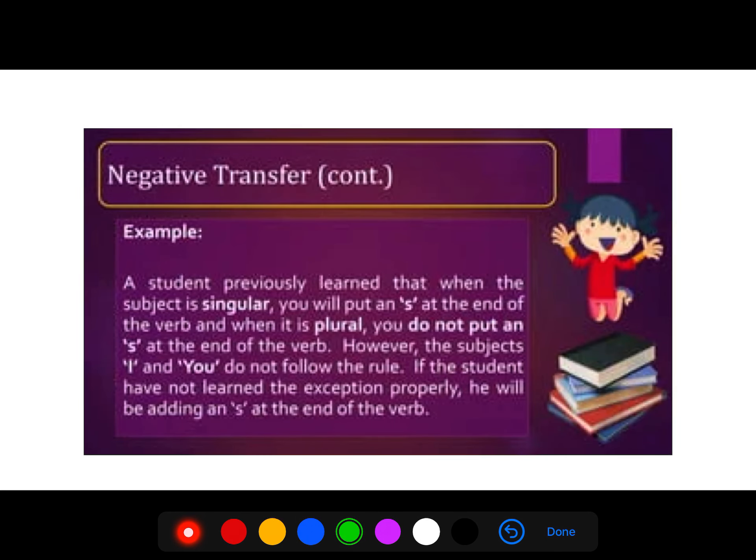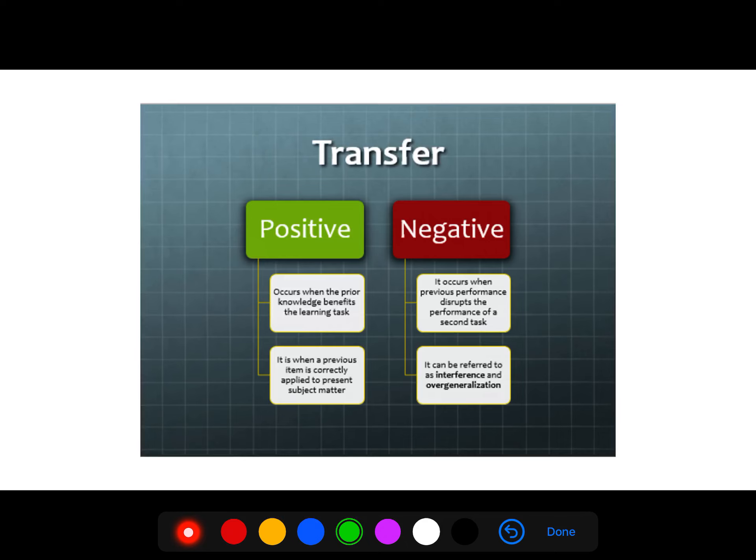Because negative transfer, for example, a student previously learned that when the subject is singular you put an 's' at the end of the verb, when it is plural you do not put an 's' at the end of the verb. However, the subjects 'I' and 'you' do not follow the rule. If the student has not learned the exception properly, he will be adding an 's' at the end of the verb. So your transfer could be positive or negative. Negative occurs when previous performance disrupts the performance of the second task, or it can be referred to as interference and overgeneralization.